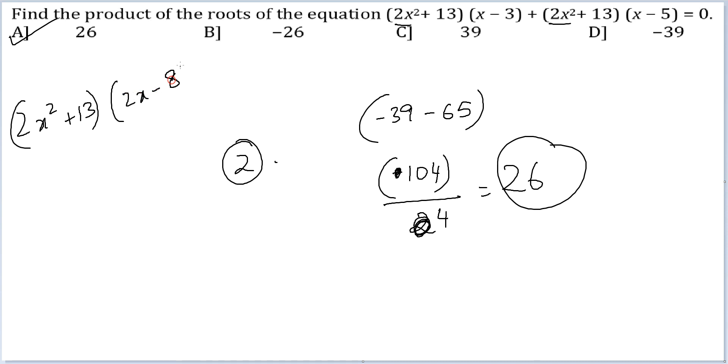So 13 times -8 is -104, which will be the constant term. But in cubic expressions, the constant term, the negative version of the constant term divided by the coefficient of the highest power. So negative version of the constant term is 104 divided by the coefficient of the highest power. The answer will be 26.